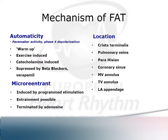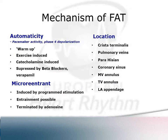There are two mechanisms of focal atrial tachycardia: automaticity and re-entry (micro-re-entrant circuit). With automaticity, cells exhibit pacemaker-like behaviour — phase IV depolarisation. They tend to be catecholamine-driven, coming on with exercise. In the EP lab they exhibit a warm-up phenomenon; you can't get them going at first, but after burst pacing things warm up. They can be suppressed by beta-blockers or verapamil, and in the lab we often use isoprenaline to induce them.